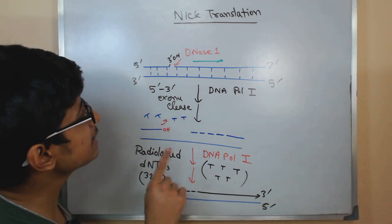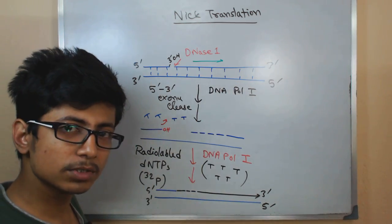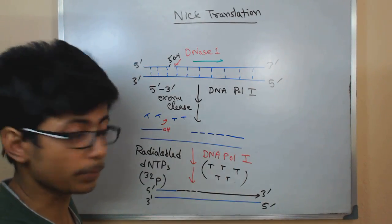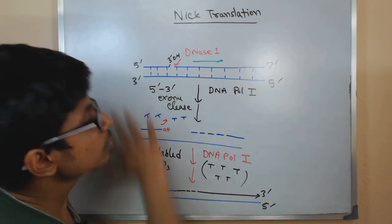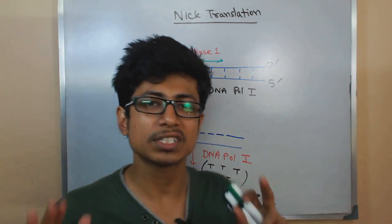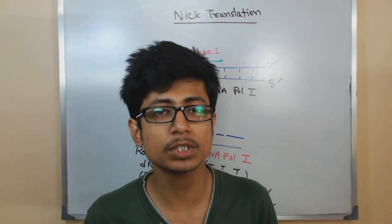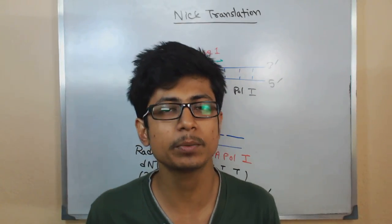The process is very easy using two enzymes: DNase I and DNA polymerase I, and radiolabeled nucleotide sequences dNTPs. So that's it. If you like the video, subscribe to my channel for more videos like this in the future and also hit a like, share it with your friends on social networks. Thank you.